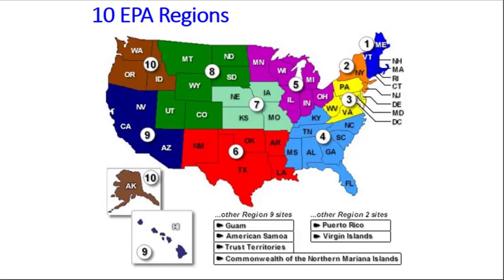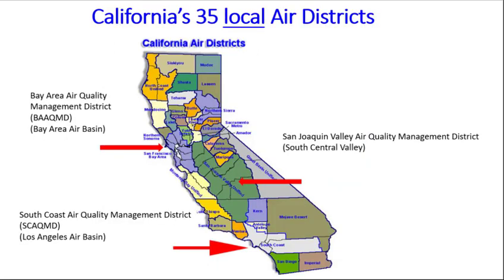EPA is divided into various regions; California is in EPA Region 9. California has 35 local air districts. Three major ones where air quality can be especially poor are highlighted: the Bay Area Air Quality Management District for the San Francisco Bay Area, the South Coast Air Quality Management District for the Los Angeles area, and the San Joaquin Valley Air Quality Management District, which includes Bakersfield, Fresno, and several other cities in the southern San Joaquin Valley.